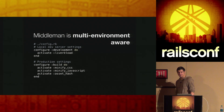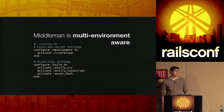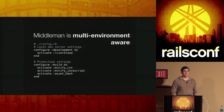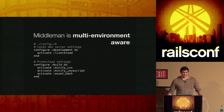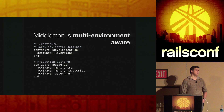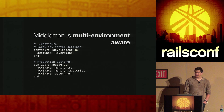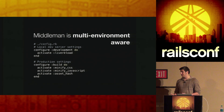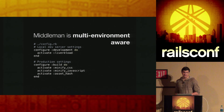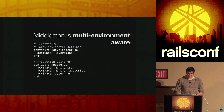Another interesting thing about Middleman is that it's multi-environment aware. In your development environment you can activate extensions like Live Reload. In production — called your build environment — you activate extensions like minifying CSS and JavaScript, and asset hashing so you can cache assets, just like you do in Rails where you give your asset path a hash.